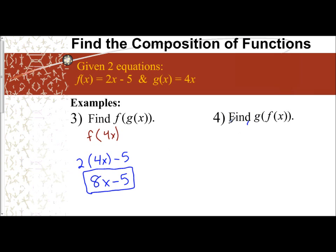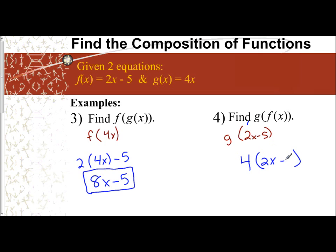Now for g of f of x. Wherever I see my x inside g, I replace it with my f(x), which is 2x − 5. So I'm really taking g of (2x − 5). Instead of writing 4x, wherever I see my variable I put parentheses and plug in 2x − 5. Distributing gives 4(2x − 5) = 8x − 20.